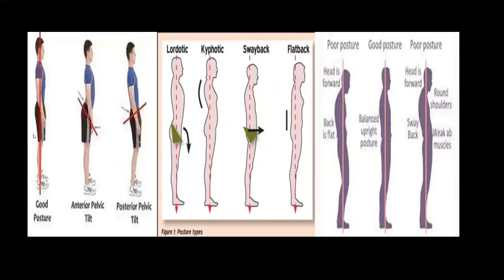You can also see diagrams here showing good posture, where the line of gravity traces from the ear lobes to the lateral part of the feet. In anterior pelvic tilt, the pelvis rotates anteriorly. In posterior pelvic tilt, the pelvis is rotating posteriorly. You can see different types of posture and how the line of gravity passes in relation to the different segments of the body.